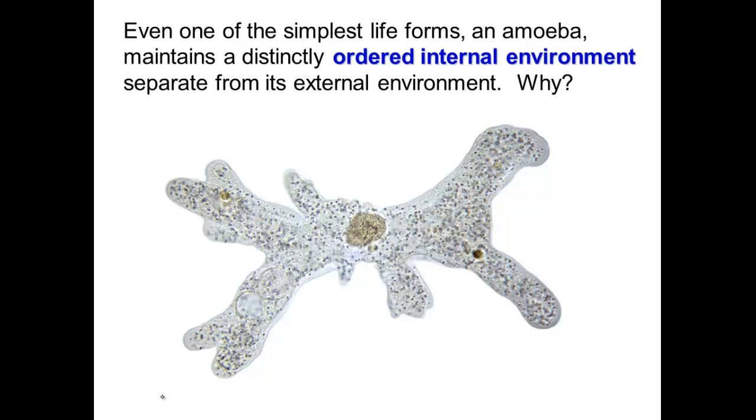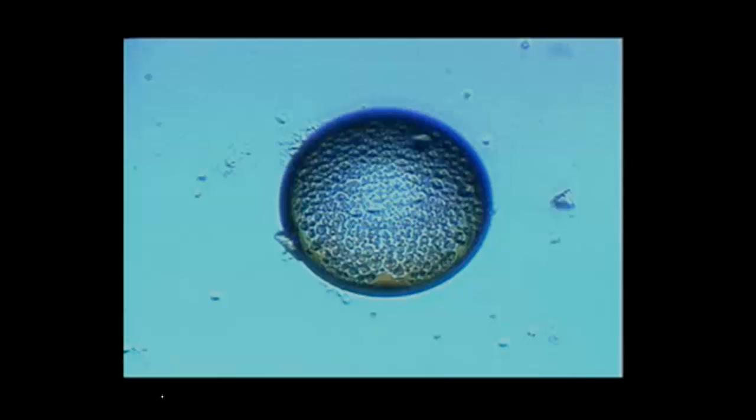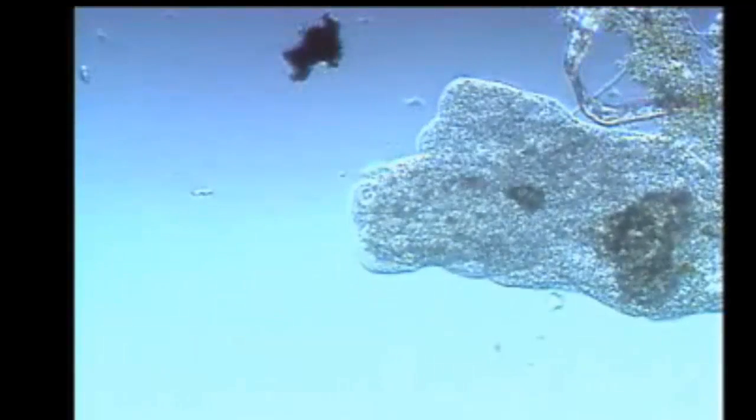Why do their insides have to be so different from their outsides? Let's watch this amoeba moving. You can see it is streaming its cytoplasm and forming a pseudopod, which you may have learned last year. Looking at the internal environment of this one-celled creature, you can see there's a paramecium — a smaller creature — coming near the amoeba, and the amoeba is engulfing it, basically eating it.